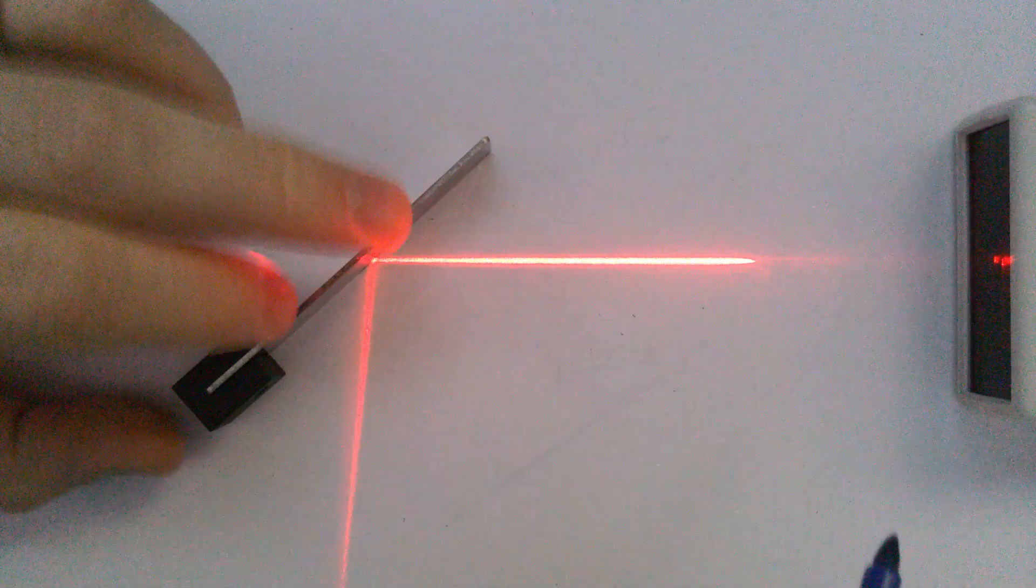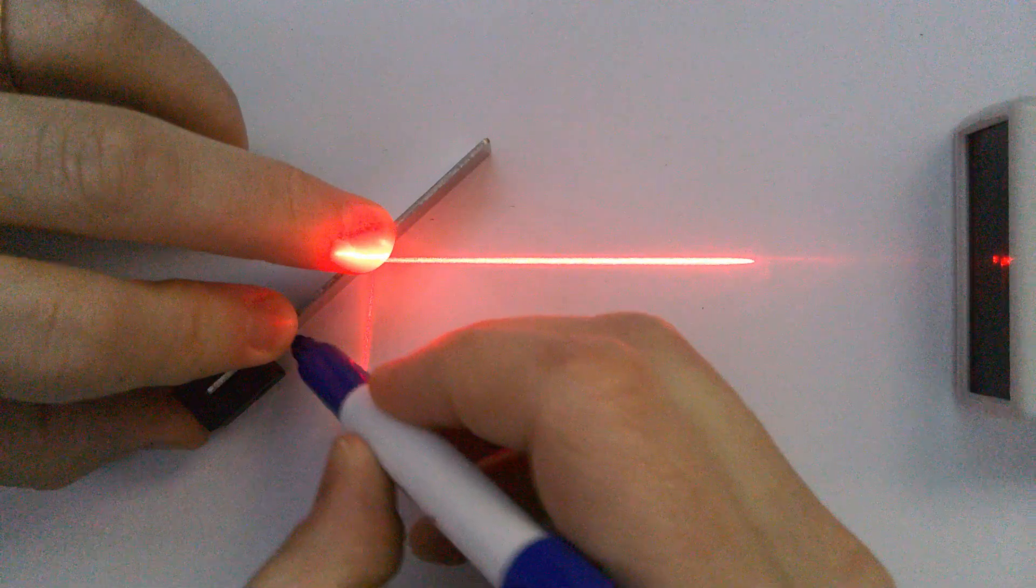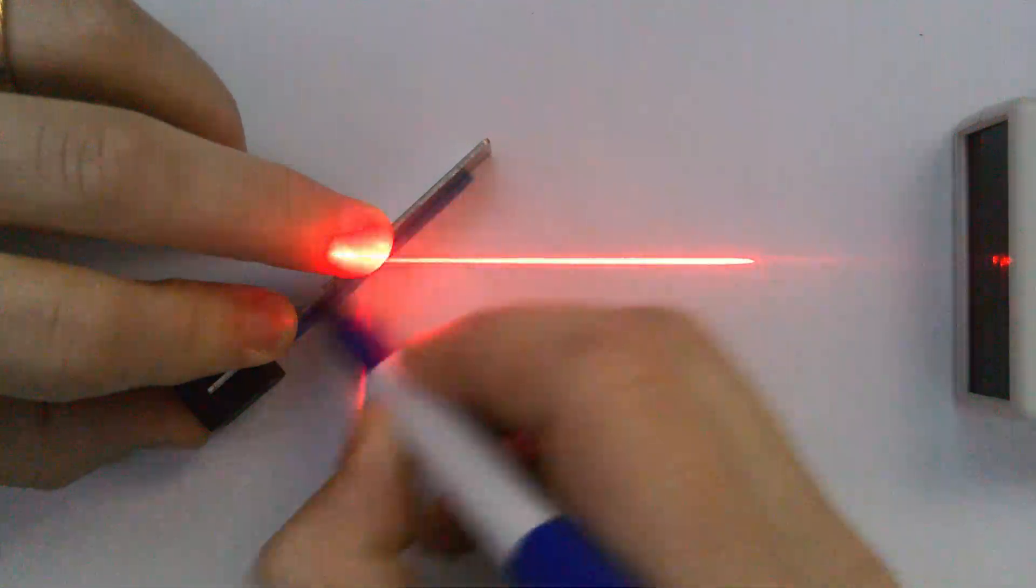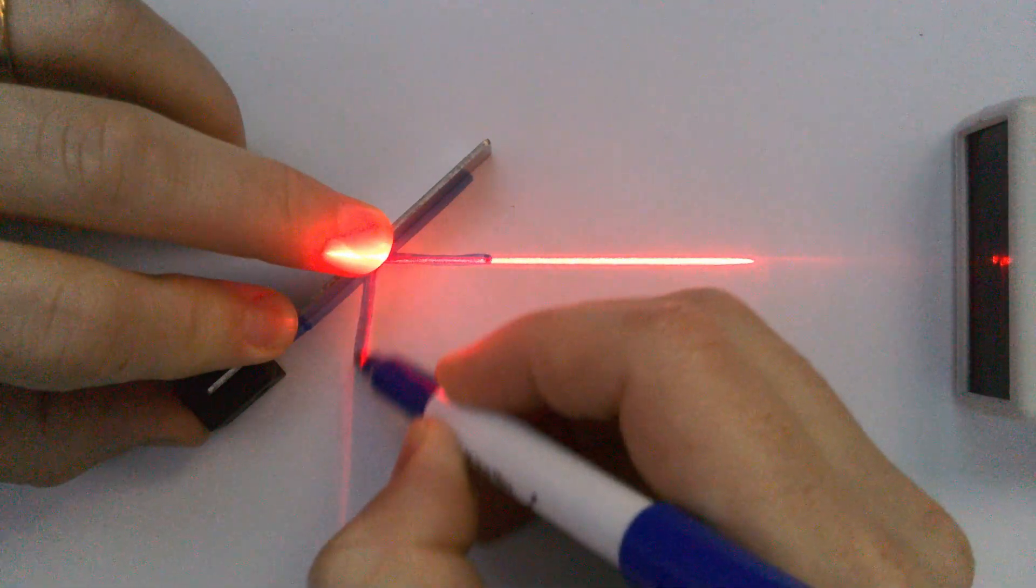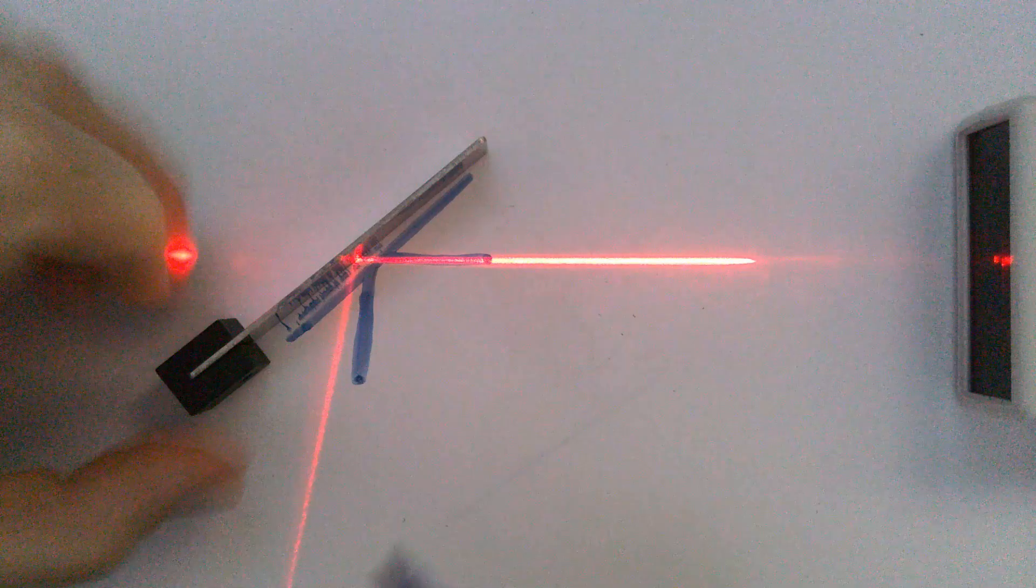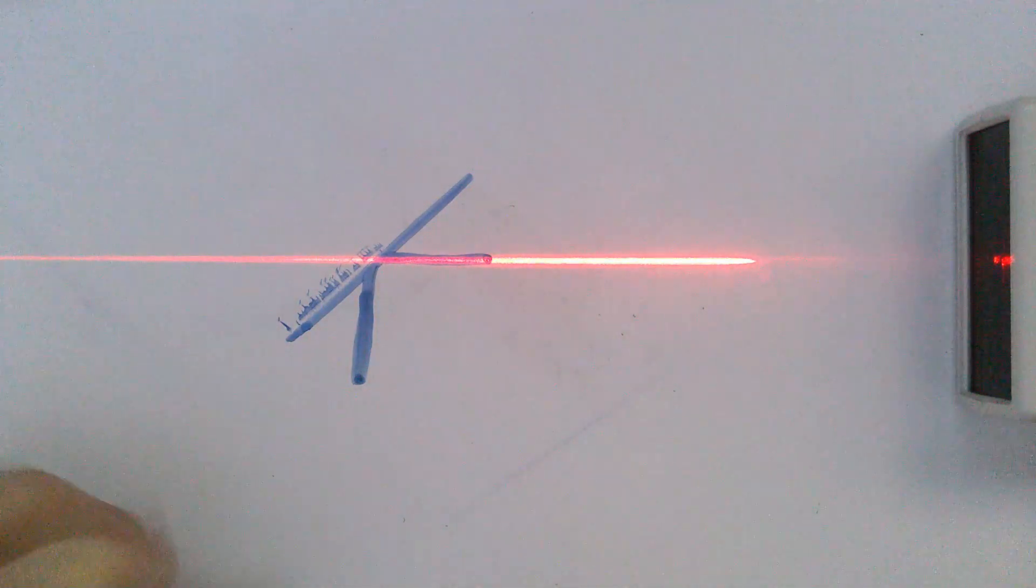So what do I mean by that? Well, if I just try to hold this in place while I make a little couple of markings here, here's the mirror, here's the ray coming in, here's the ray going out. Bear in mind I'm drawing this freehand with a whiteboard marker, so it's not super smooth.